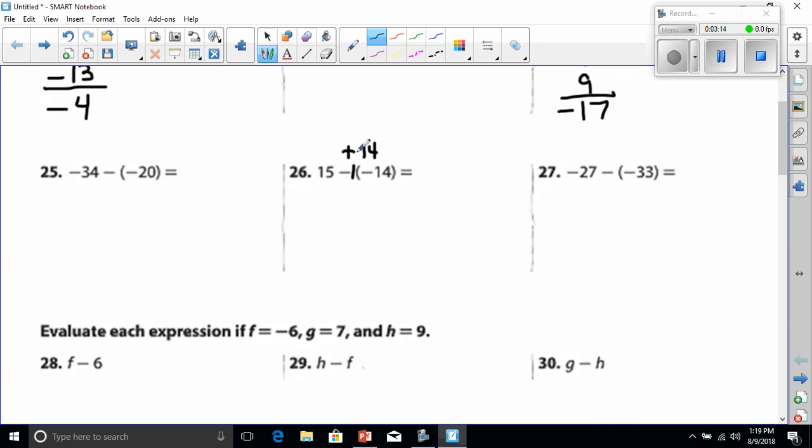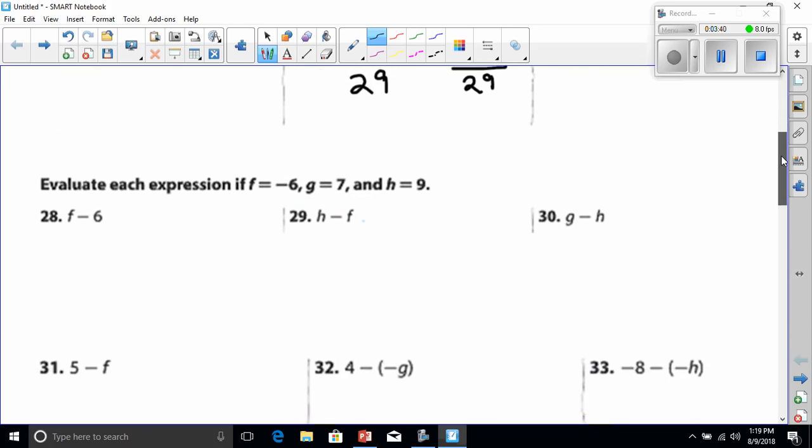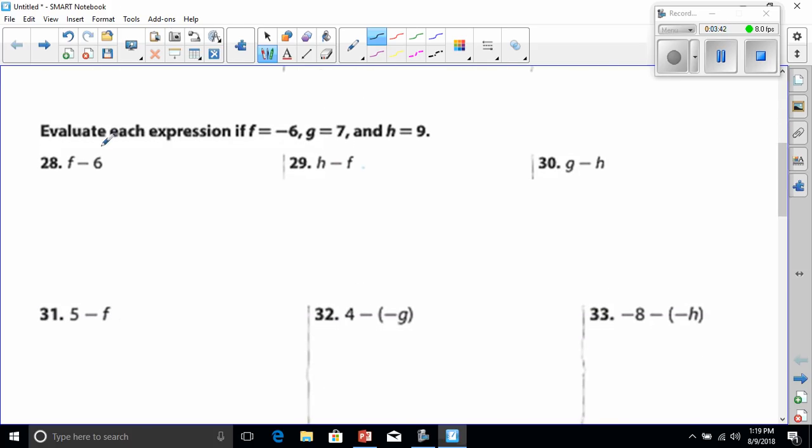Now we have 15 plus 14, and 15 plus 14, well that's 29. For those of you that find it easier to stack your numbers, you're still going to get the same answer. 5 plus 4 is 9, 1 plus 1 is 2.